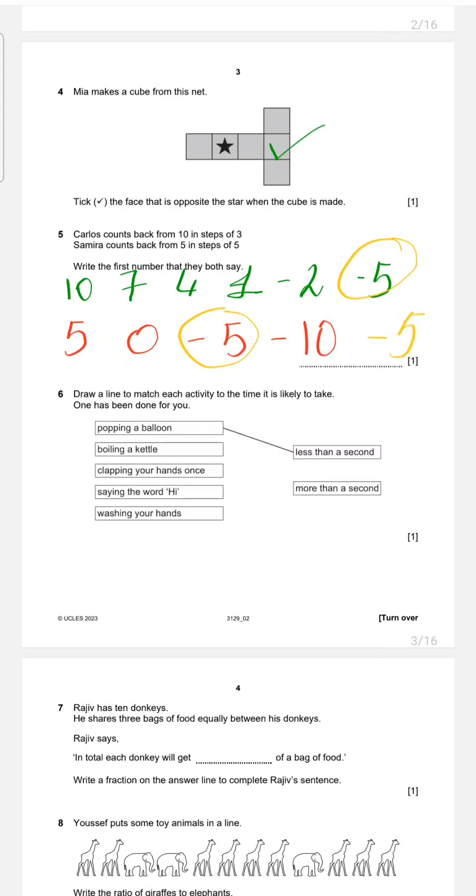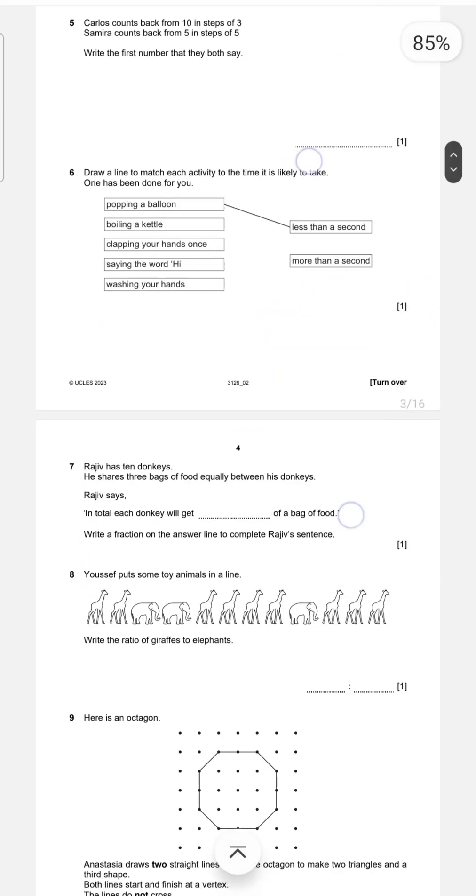Question 6. Draw a line to match activity to the time it's likely to take. One has been done for you. Popping a balloon less than a second. Boiling a kettle, it takes time because you're boiling water. The boiling water is more than seconds. I think approximately 10 or maybe 15 minutes enough for boiling water. So boiling a kettle is more than a second. Clapping your hand once, just one second. This is less than second. Saying the word 'hi', this is less than second. Washing your hands, I think that's one or two minutes.